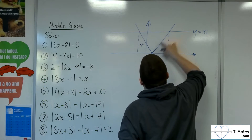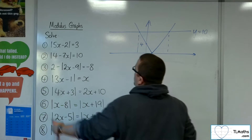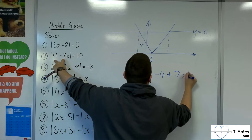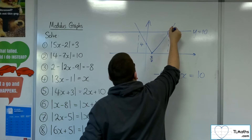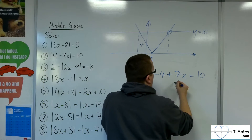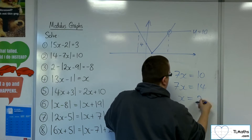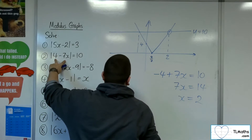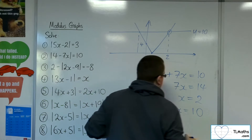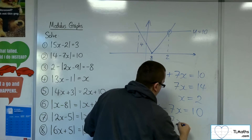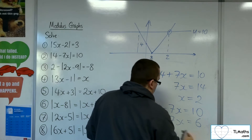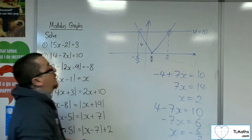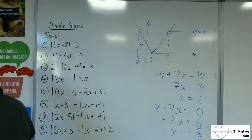Looking at the equation of the lines: that line has positive gradient, so we'll have minus 4 plus 7x equals 10. Adding 4 to both sides, then dividing both sides by 7, gives x equals 2. The other line has equation y equals 4 minus 7x, and when that equals 10, taking 4 from both sides and dividing by minus 7 gives x equals minus 6 sevenths. So that's number 2.